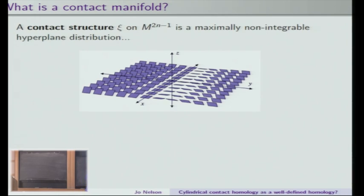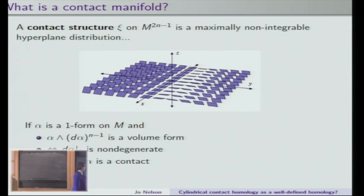So here you can't draw a two-dimensional submanifold with tangent space given by these hyperplanes. And then it's kind of awkward to have this notion of a contact structure because there's not really a good way to give you some maximally non-integrable hyperplane distribution — it's kind of a lot to say.